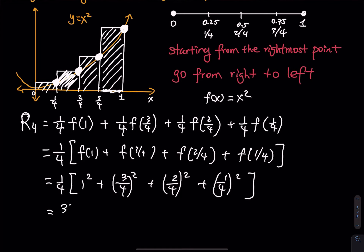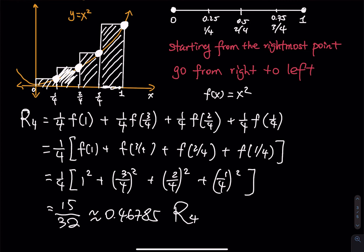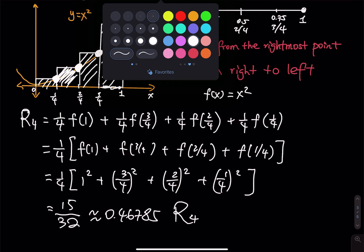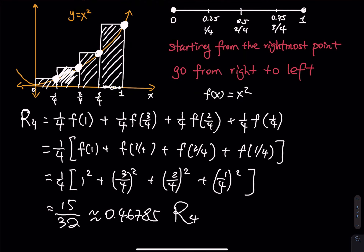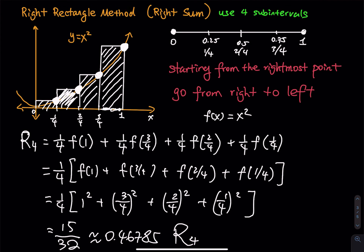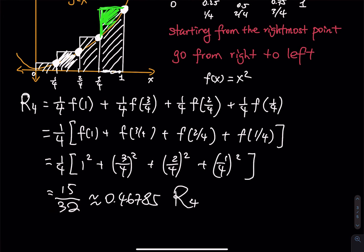Overall you get 15 over 32, which is approximately equal to 0.46875. This is the right sum using 4 subintervals. To find out whether this is an underestimate or overestimate, look at the picture. For every rectangle I create, there is some extra green area above the curve. This happens on every rectangle, so this right sum is an overestimation.